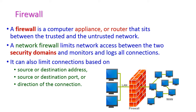First, let us see what is a firewall. A firewall is a computer appliance or network that sits between the trusted and untrusted network. This firewall — which may be a router — sits between the trusted LAN and the untrusted wide area network, otherwise called the internet. The trusted LAN is connected to the untrusted internet through the firewall, and the network firewall limits the network access between two security domains.